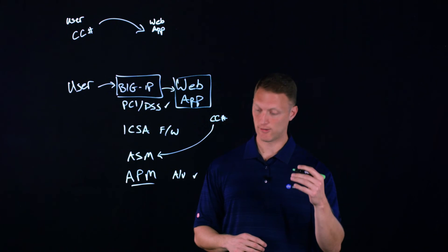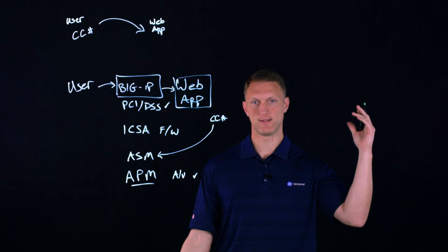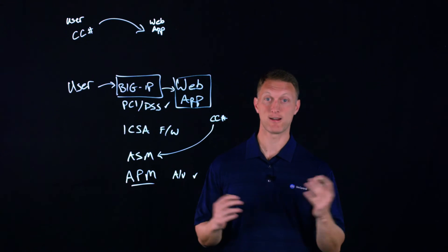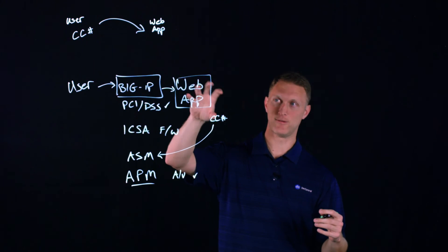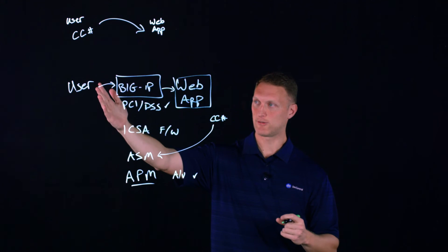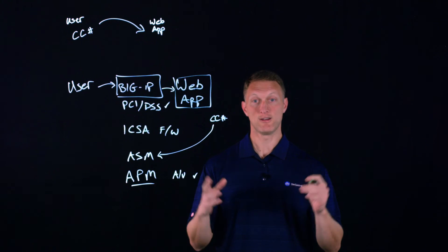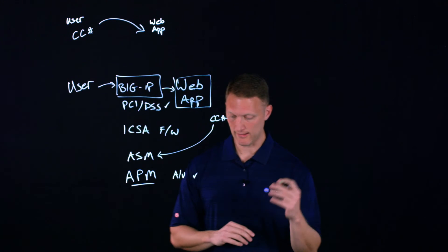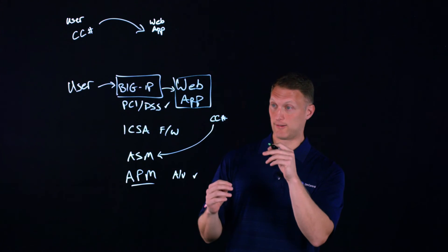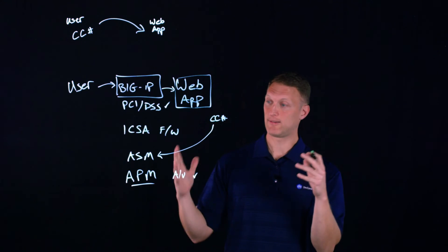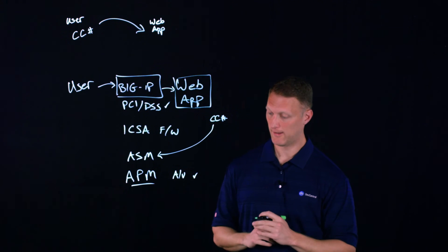Another thing that PCI DSS says is monitor and test your networks. And we have a whole series actually of lightboards or whiteboards back in the day on monitoring and the big IP, what it can do in terms of monitoring. So it can monitor backend servers. You can monitor user activity again via the APM with those sessions that I was just talking about. And so you can do a lot of really cool monitoring. And then as far as testing goes, you can do that as well. There's also some very powerful logging capabilities that the ASM, APM, and really any big IP module has that you can log and you can look at all the activity that goes on.